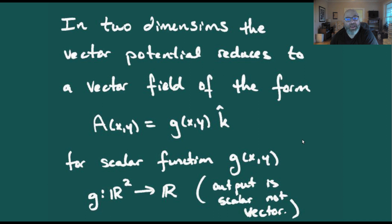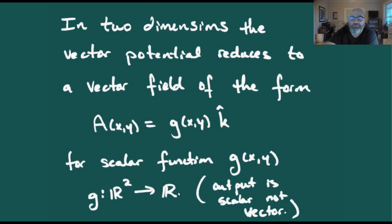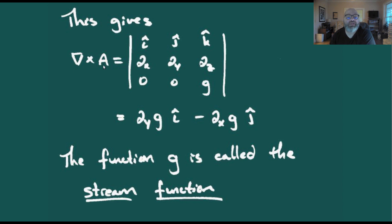In two dimensions, the vector potential has a particularly simple form: it looks like a scalar function g(x, y) in the z-direction. A scalar function outputs a real number rather than a vector. Computing del × A for this case, where A = g(x,y)k, gives ∂g/∂y for the first component and −∂g/∂x for the second component. This function g is called the stream function for the vector field.